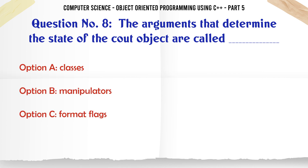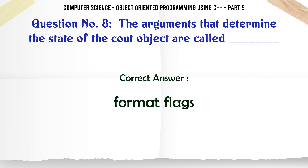The arguments that determine the state of the cout object are called. A. Classes. B. Manipulators. C. Format flags. D. State controllers. The correct answer is: Format flags.